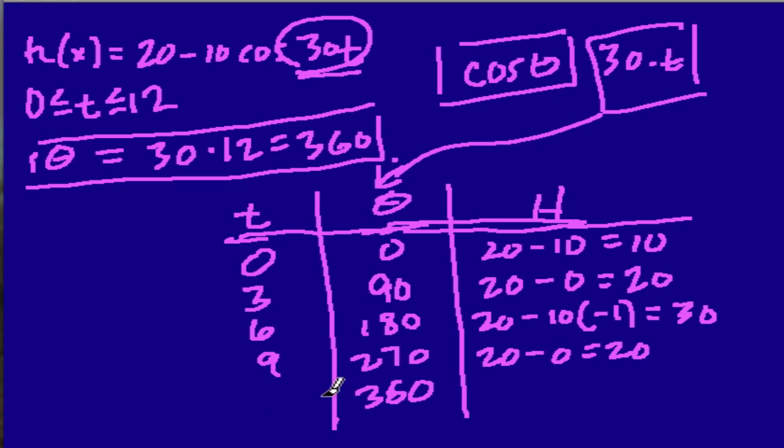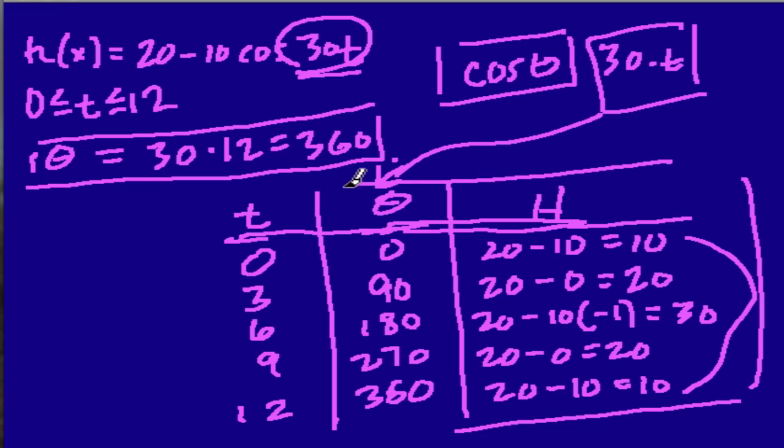And then to get 360, we just plug in 12 seconds for time. And 30 times 12 is 360, that's 20 minus 10 times 1. So that's just, again, 10. And notice our pattern is already repeating. And now that we have this, we can sketch a graph of our function.